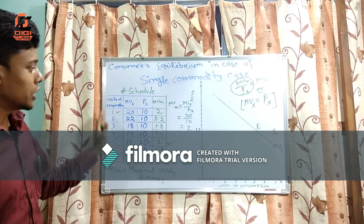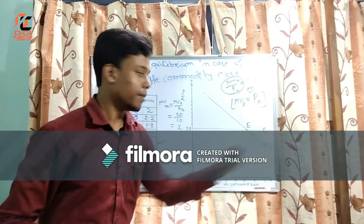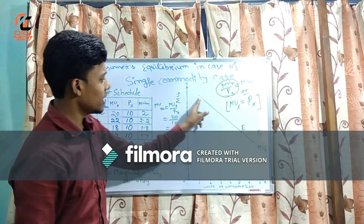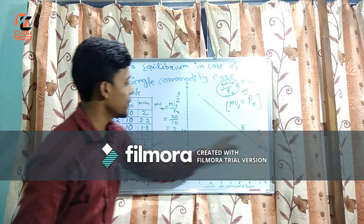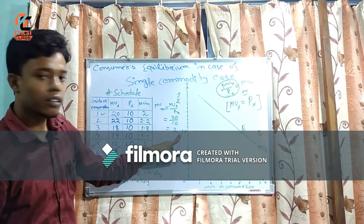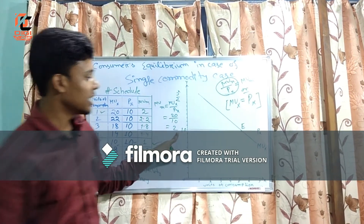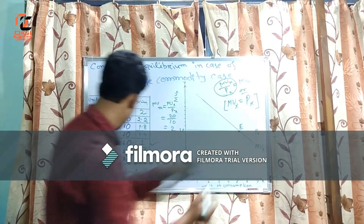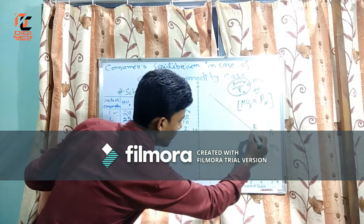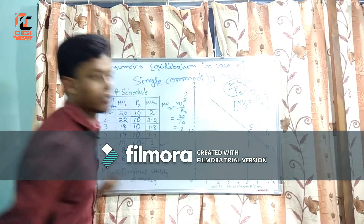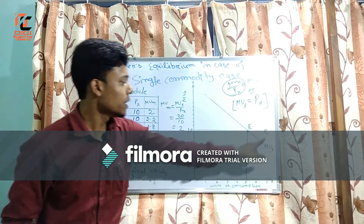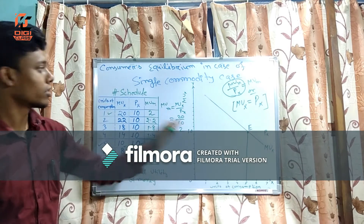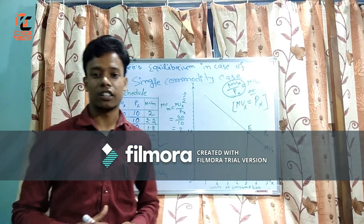From the schedule we can draw the diagram. In the diagram, the MUX curve slopes downward and the PX curve is a horizontal line equal to 10. At point E, at the fifth unit of consumption, PX becomes equal to MUX, and that is the equilibrium point.